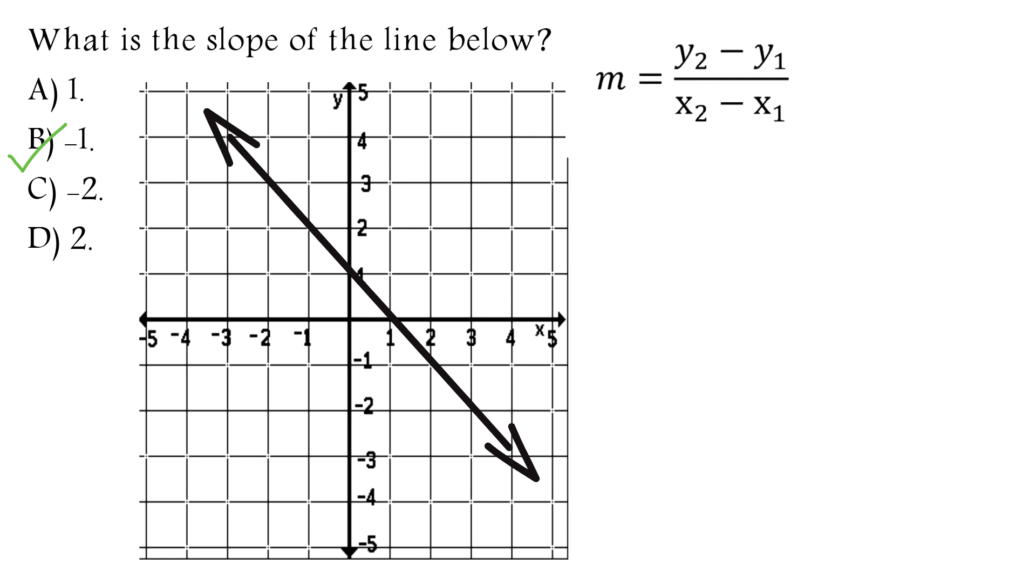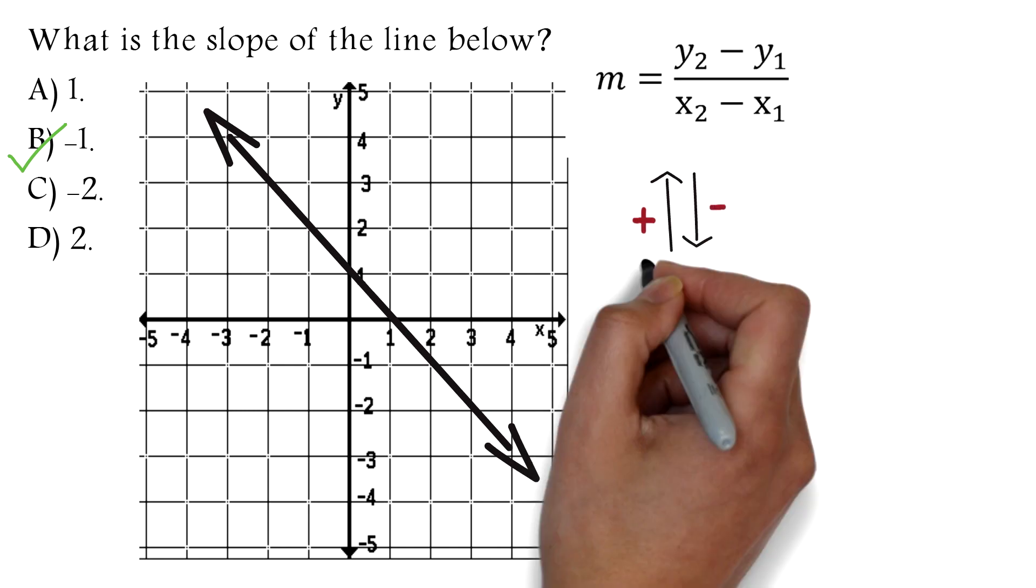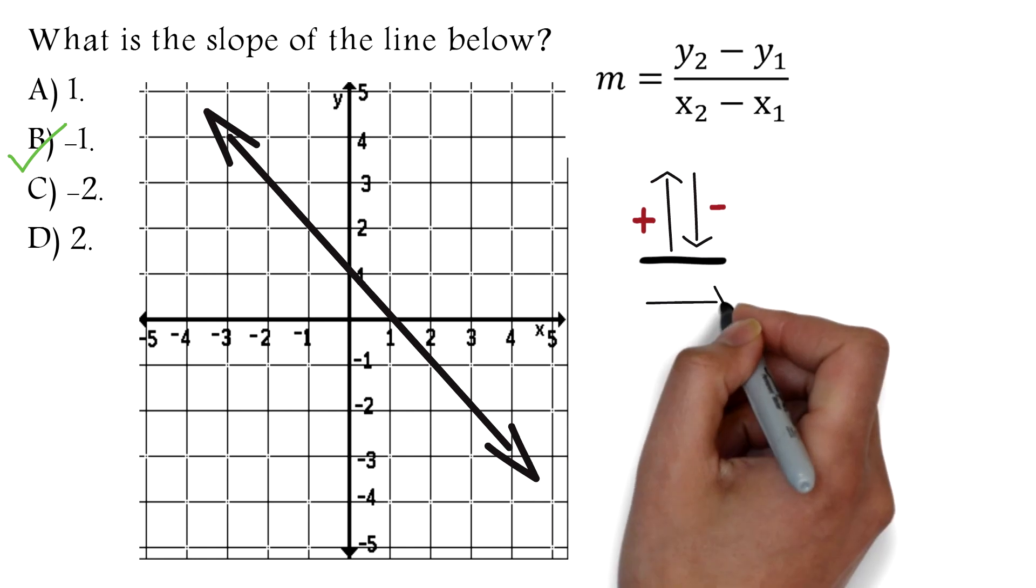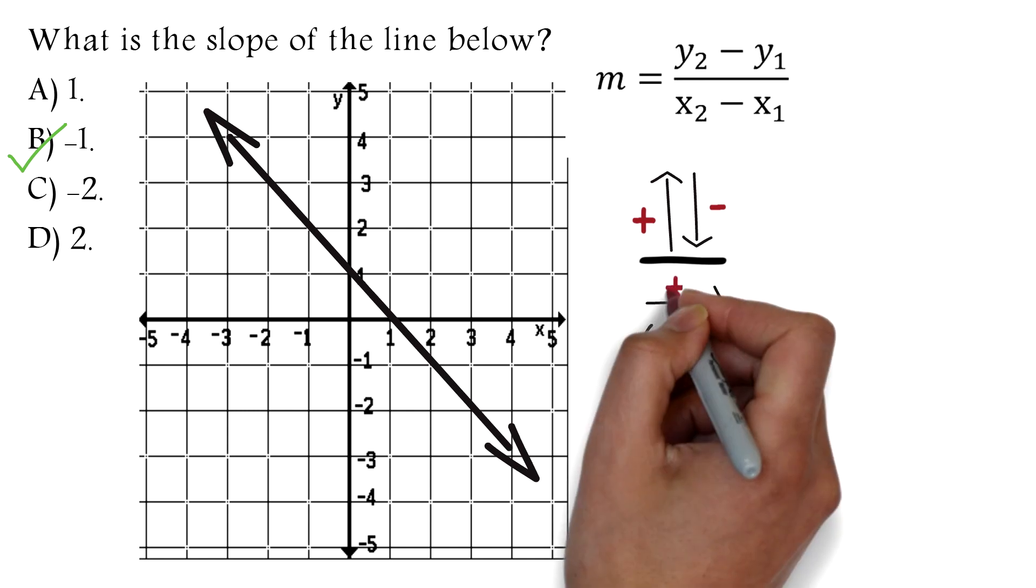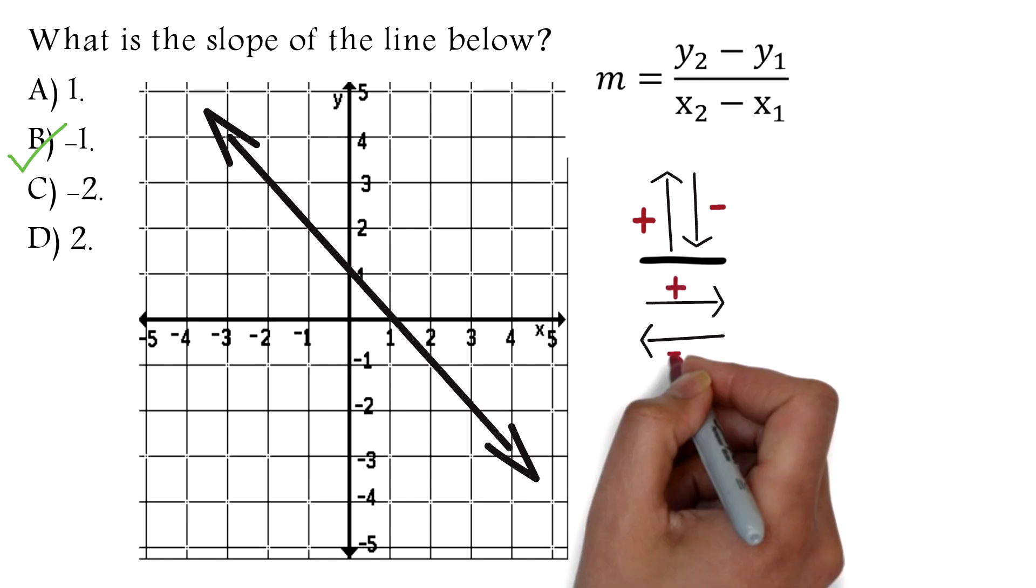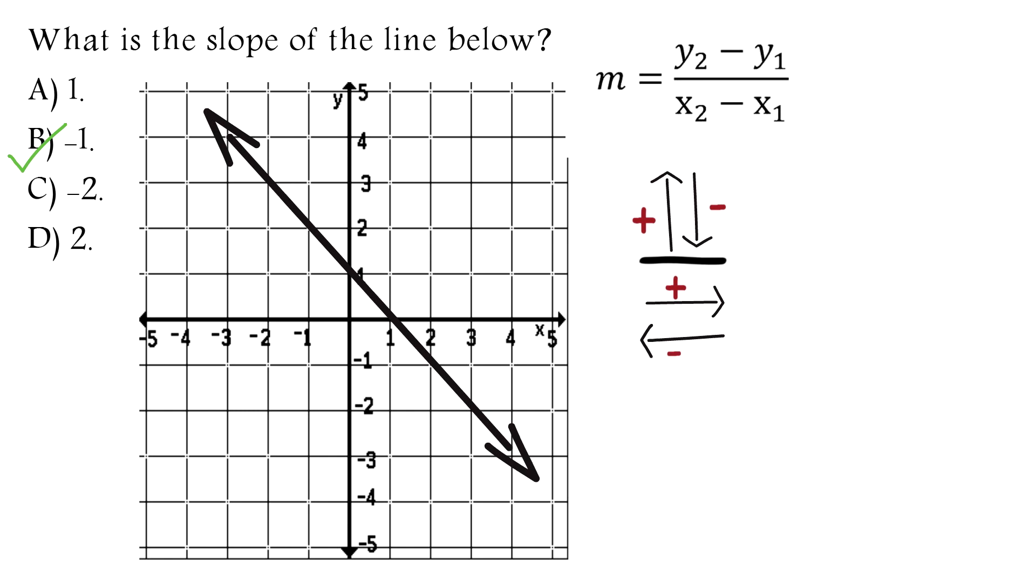We know that the change in y simply means how many points you are going up or down. If you are going up, then you have a positive change. If you are going down, then you have a negative change. The change in x simply means how many points you are going to the right or left. If you are going to the right, then you have a positive change. If you are going to the left, then you have a negative change. Let's look at our question. Our first step will be to choose any two points on the line.